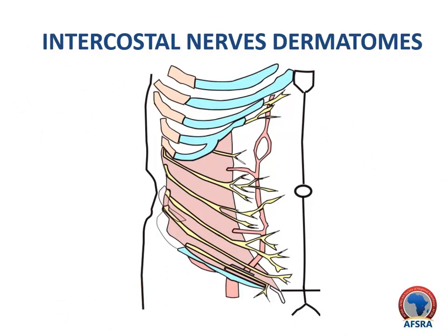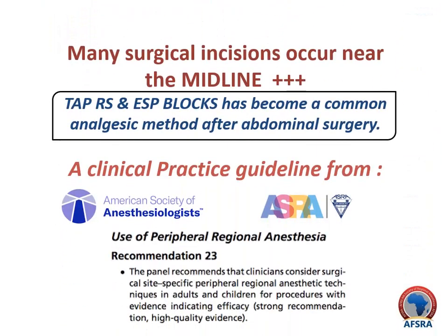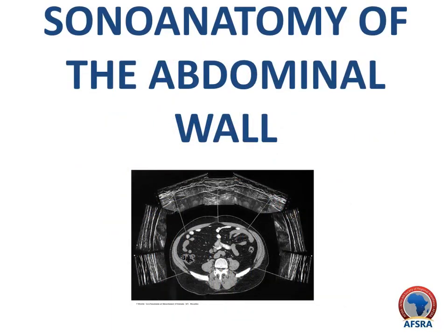Many surgical incisions occur near the midline of the abdomen. Subcostal TAP and rectus sheath blocks can be highly effective for those procedures. One approach to identifying the layers is to start in the midline with an axial orientation of the ultrasound transducer.